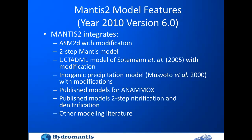We named this model MANCIS II, introduced in 2010 in version 6. The concept was to integrate existing models like the ASM2D model, the 2-step MANCIS model, anaerobic digester models, organic classification model, and features like ANAMMOX, 2-step nitrification, and denitrification — integrating all of this into a comprehensive model for whole-plant modeling.